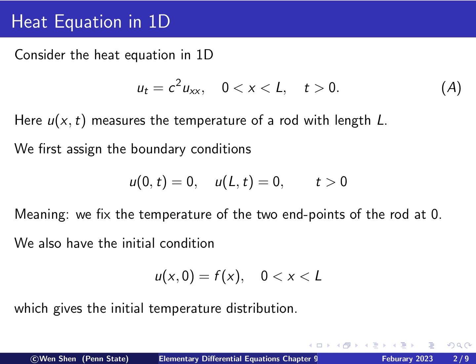Furthermore, we also have an initial condition: when t equals zero, u as a function of x — let's call this f of x — and this is valid on the interval from 0 to L. The meaning of this condition is that at t equals zero we have some initial temperature distribution on the interval from 0 to L, which can be described by the function f.